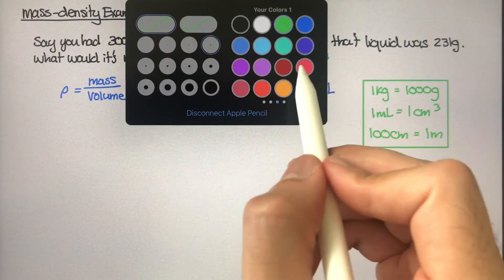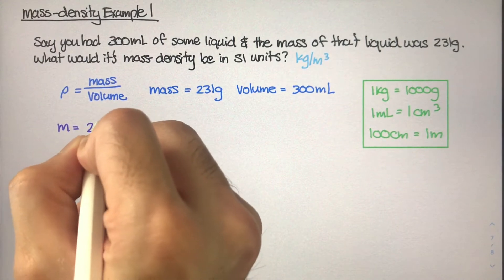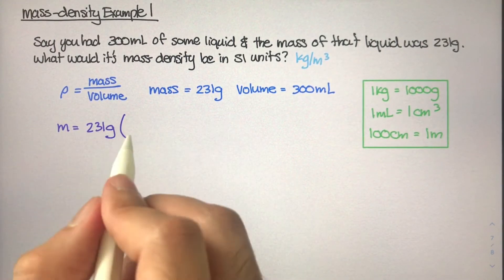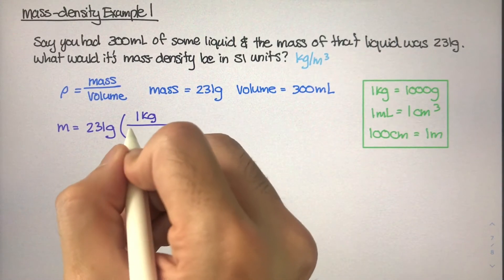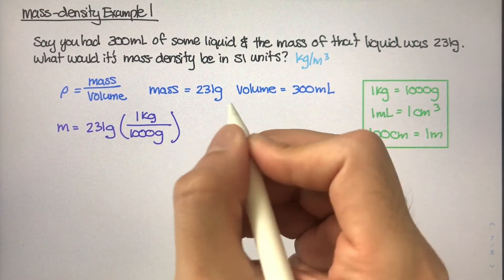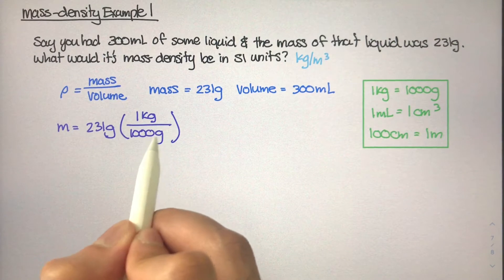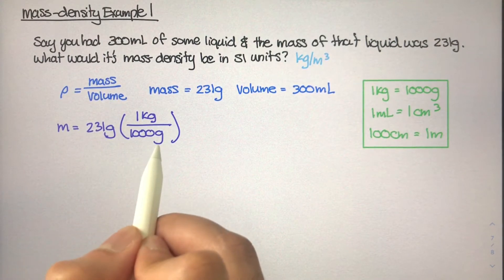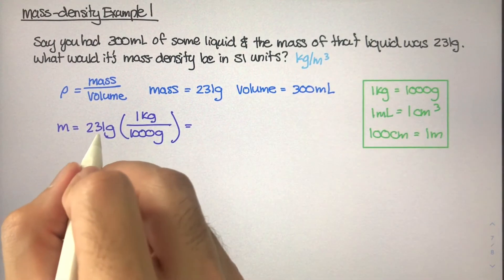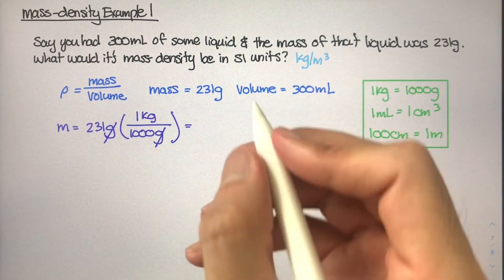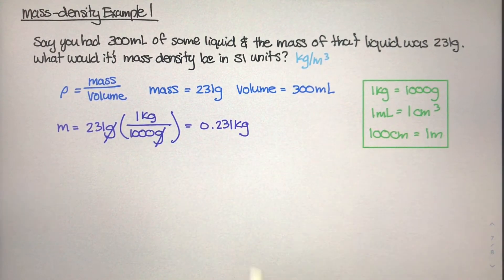Let's do the easy one first. The easy conversion is this mass of 231 grams. In order to convert from grams to kilograms, we know that one kilogram equals 1000 grams. The reason I put kilograms on top is because if we divide grams by grams, the g unit will cancel out. Grams will cancel and we'll be left with kilograms. If I do this simple calculation, 231 divided by 1000, these two units cancel out and we're left with 0.231 kilograms. Great, so now we have the mass.